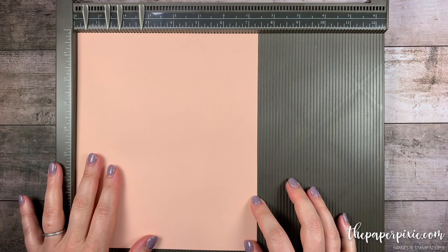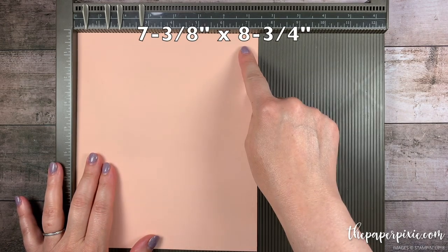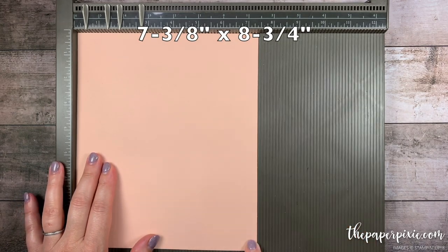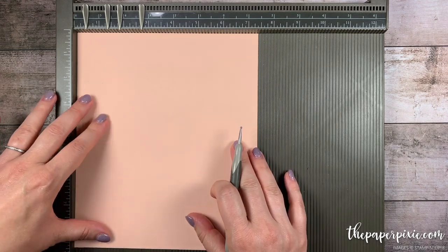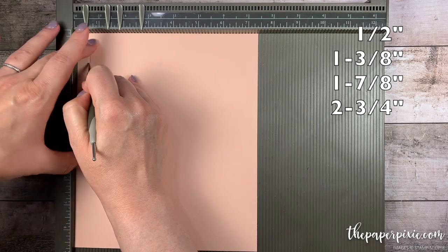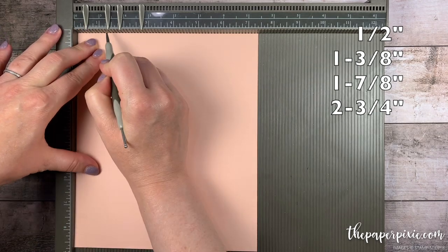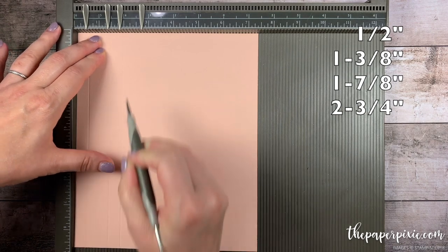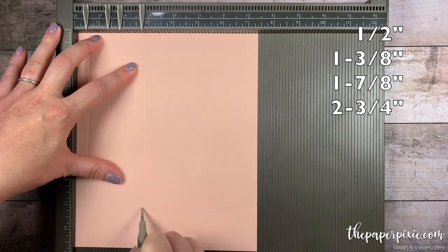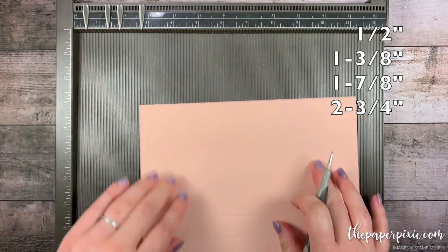We're going to start with a piece of petal pink card stock that measures 7 3/8 inches by 8 3/4 inches. And on all four sides, we're going to score the box at half an inch, 1 3/8, 1 7/8, and 2 3/4. And I'm going to repeat that on the remaining three sides.